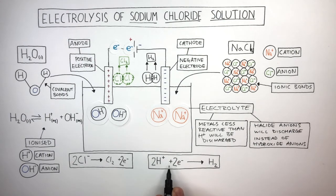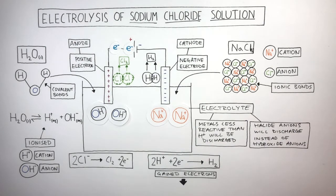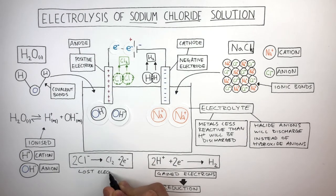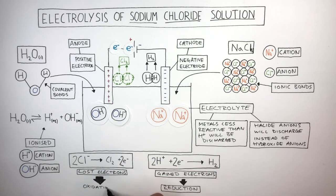As the hydrogen cations have gained electrons, reduction has taken place at the cathode. And because the chloride anions have lost electrons, oxidation has taken place at the anode.